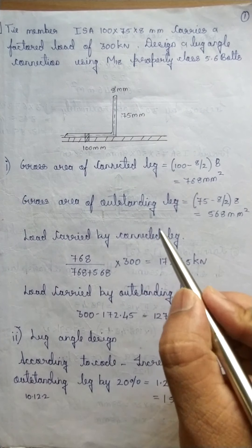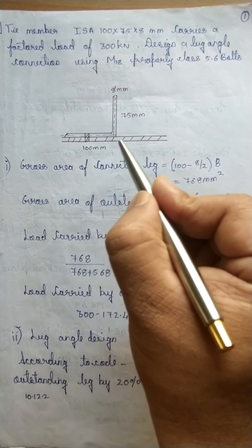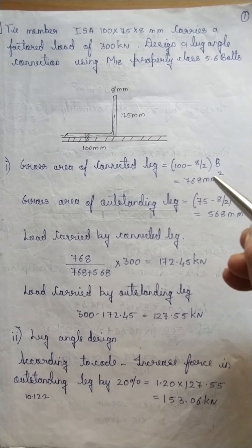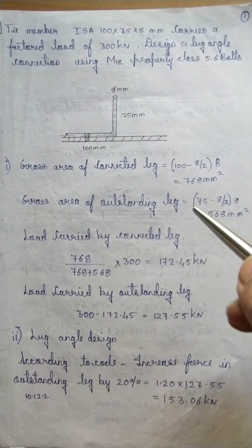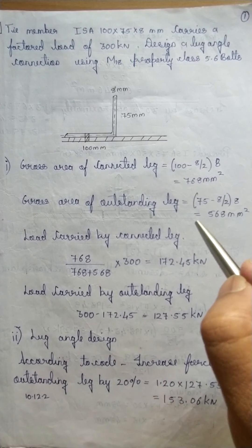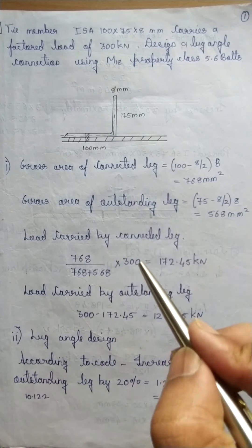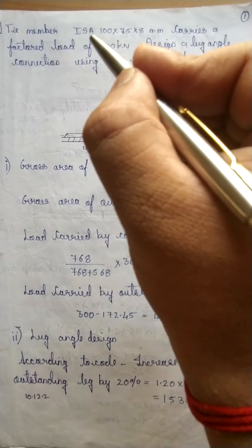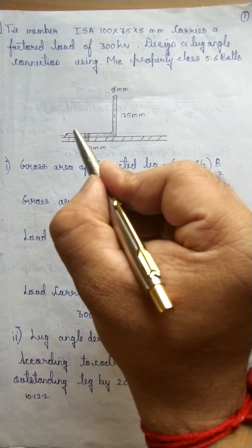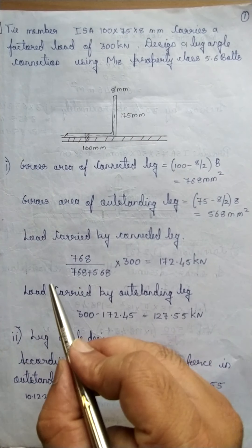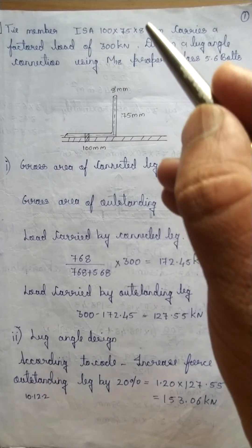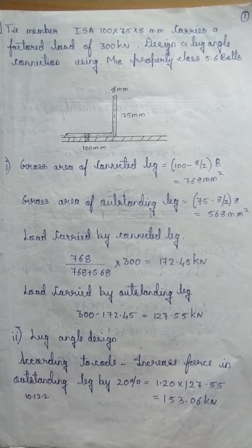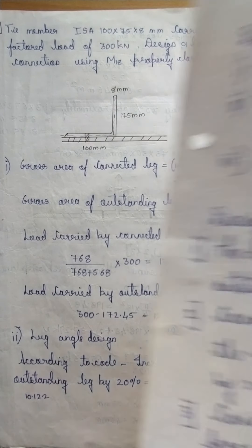Load carried by the connected leg = (area of connected leg / total area) × total force = 172.45 kN. This means out of 300 kN, 172.45 kN is carried by the connected leg. The load carried by the outstanding leg = 300 − 172.45 = 127.55 kN.